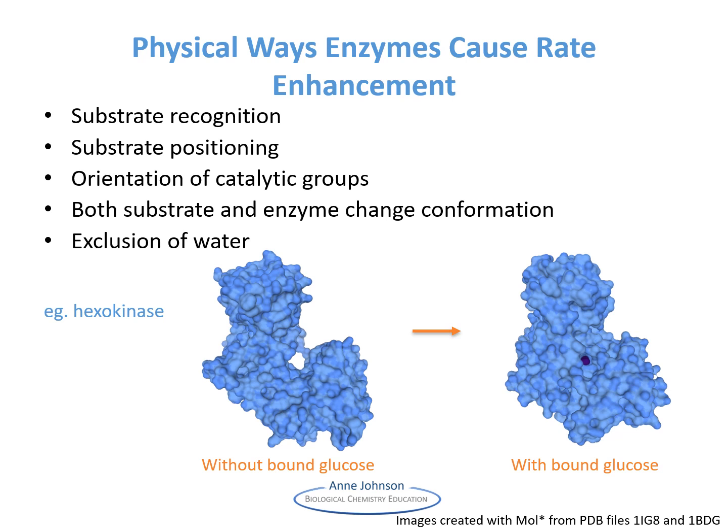Enzyme reactions occur in the active site of the enzyme. This is where catalytic residues and other amino acids that help with substrate recognition are located. The substrate is bound in the active site by many weak intramolecular forces. Holding the substrate close to the reactant groups in the active site has the effect of increasing the relative concentrations of the reactants, so the reaction is faster. The substrate and the enzyme both undergo conformational change in order to position the substrate and the catalytic active site residues for optimal reaction and stabilization of the transition state. This is sometimes referred to as orbital steering.